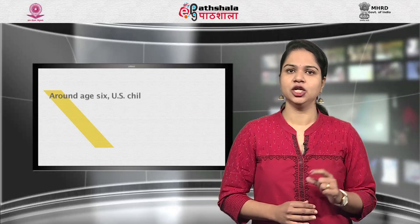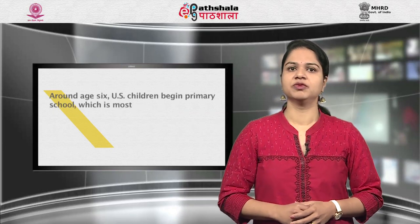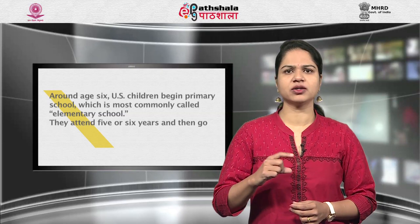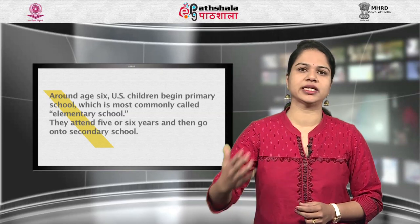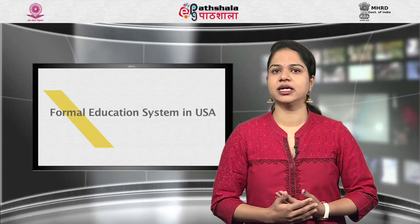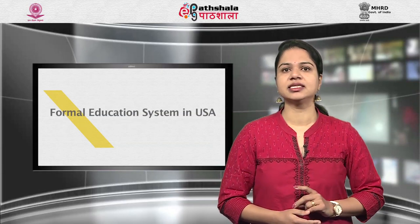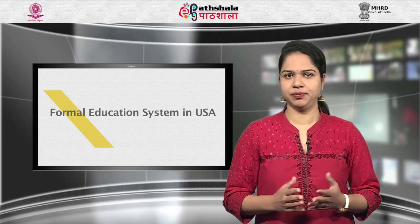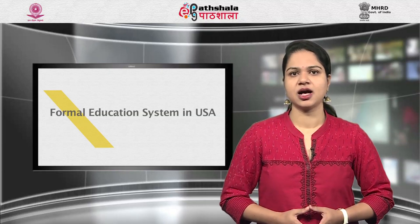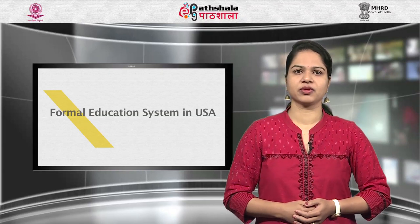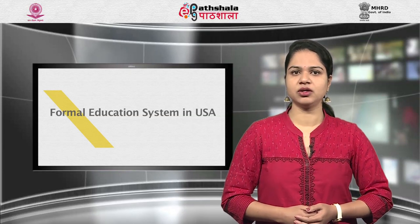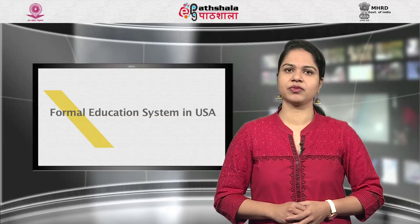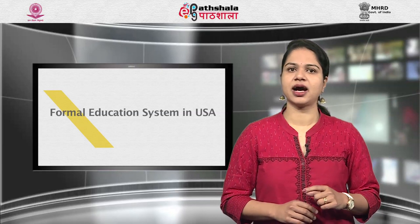Around age 6, US children begin primary school, which is most commonly called the elementary school. They attend 5 or 6 years and then go on to secondary school, which consists of two programs: middle school or junior high school, and high school. A diploma or certificate is awarded upon graduation from high school. After graduating high school at the 12th grade, US students may go on to college or university, known as higher education.